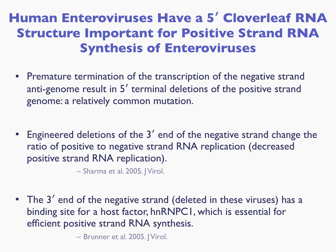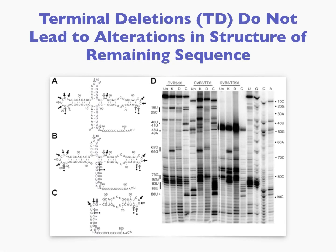There is a factor — heterogeneous ribonucleoprotein C (HNRNPC) — that actually binds to the part of the genome that is deleted in these defective enteroviruses, and it is required for efficient positive strand RNA synthesis. The deletions we found in the mouse ranged in size in this cloverleaf structure from only 7 nucleotides to 49 nucleotides. We've never found a deletion bigger than 49 nucleotides. This particular stem-loop structure in the RNA genome seems to be necessary for replication even in the defective virus.